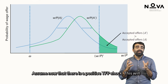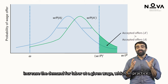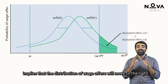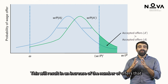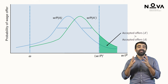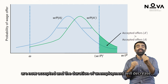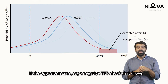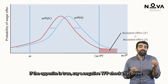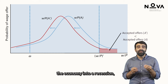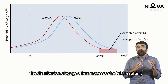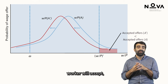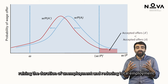Assume now that there is a positive TFP shock. This will increase the demand for labour at the given wage, which in practice implies that the distribution of wage offers will move to the right. This results in an increase in the number of offers that are accepted, and the duration of unemployment will decrease, resulting in an increase in employment — just as we saw in the data. If the opposite is true, say a negative TFP shock driving the economy into a recession, the distribution of wage offers moves to the left, resulting in a smaller probability of receiving acceptable offers, raising the duration of unemployment and reducing total employment.